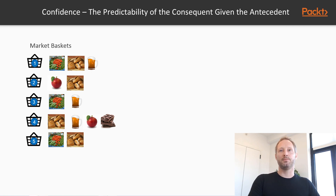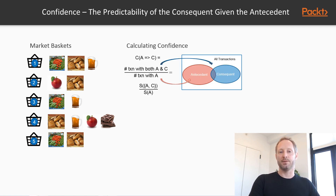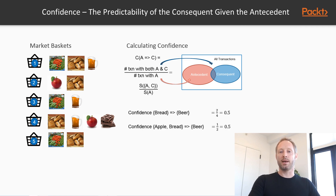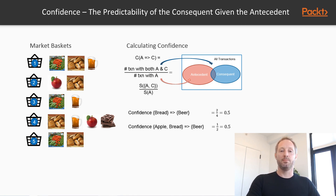The next metric is confidence, which tells us about the predictability of the consequent given the antecedent. To calculate confidence, you take the support for the transactions that involve both the antecedent and the consequent — that is, the support for the rule — and divide it by the support for the antecedent alone. In our case, the confidence for the rule bread implies beer is 2 out of 4, or 0.5. Similarly, the confidence for the rule apple and bread implies beer is also 0.5, but derived from 1 out of 2.